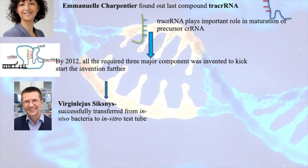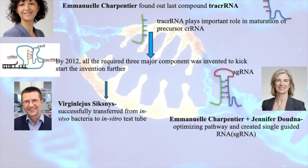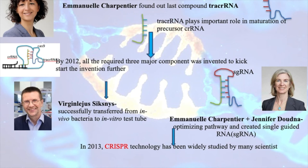The next scientist successfully transferred the in vivo CRISPR bacteria into in vitro test tubes, which was helpful for further invention stages. Then Jennifer Doudna, working alongside Emmanuelle Charpentier, created a linker loop connecting the CRISPR RNA and the tracer RNA. This connected loop enabled further artificial invention processes, and is called guide RNA.